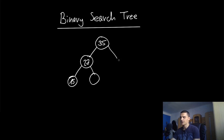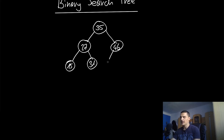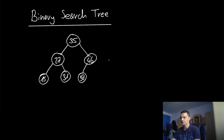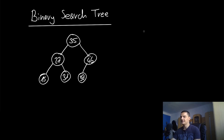Now if we have a node to the right, it has to be larger than the parent node. So a node to the right of 35 has to be larger than 35, for example 46. But if we have a right child of 27, it has to be larger than 27 but also less than 35 since it's to the left of 35 — so something in between, for example 31. And here we have less than 46 but larger than 35, so for example 37.